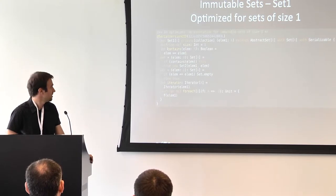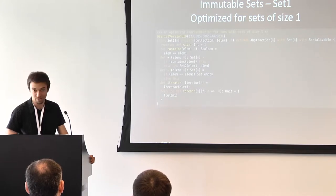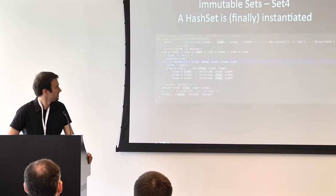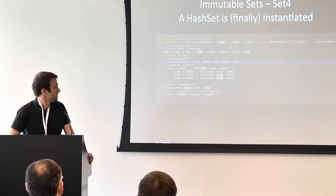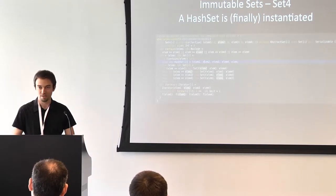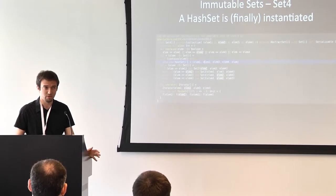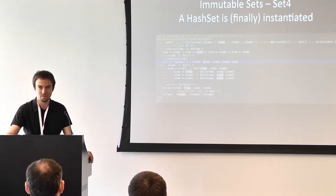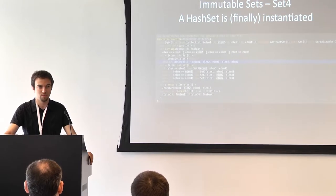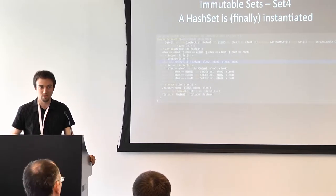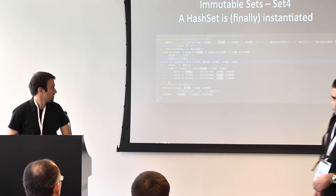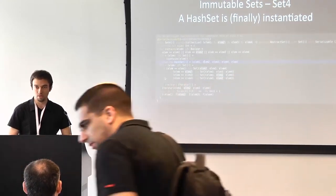When you call plus on Set1, you get Set2, which is another specialized hard-coded implementation for sets of size two. The same happens for Set3, and only at Set4 do we finally get a HashSet initialized. So there are up to four levels of highly specialized collections before we instantiate a generic one. The reason, based on research Martin Odersky has discussed, is that in most practical cases we have tons of very small collections in code, and it's a pragmatic approach to have specialized implementations for those.